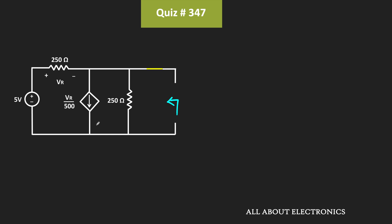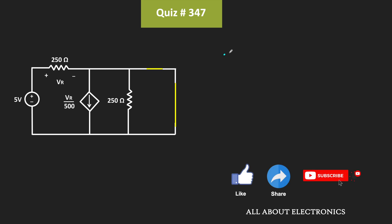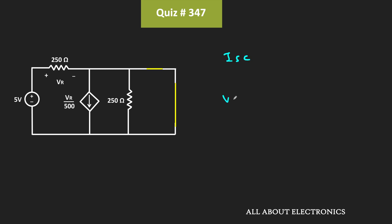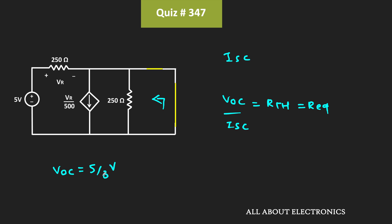Since the circuit contains both independent and dependent sources, we will find the open circuit voltage across the two terminals and then short those terminals to find the short circuit current. The ratio of open circuit voltage to short circuit current gives the Thevenin equivalent resistance. We already found the open circuit voltage, which equals 5/3 V, so now we only need to find the short circuit current. Once we short these two terminals, this 250Ω resistor will also get short circuited.